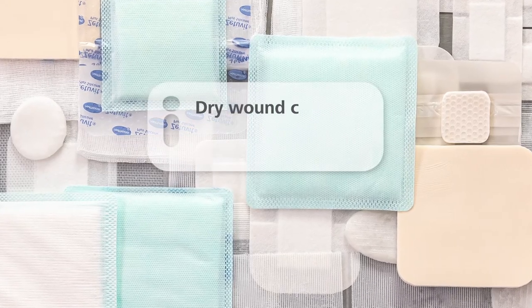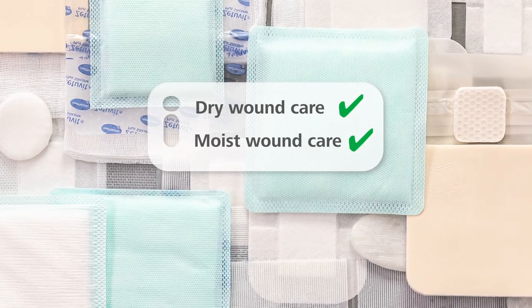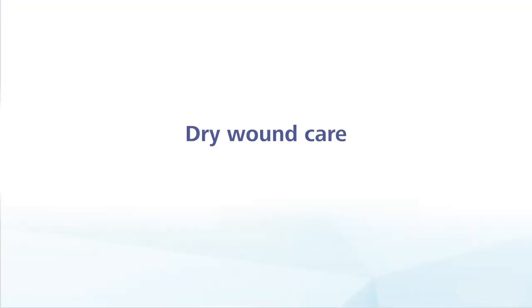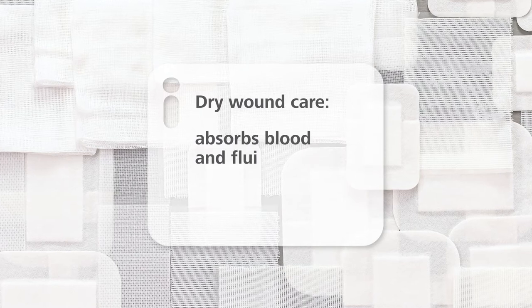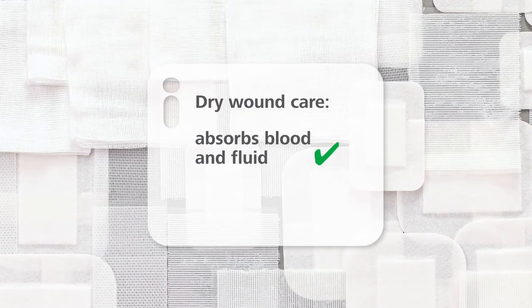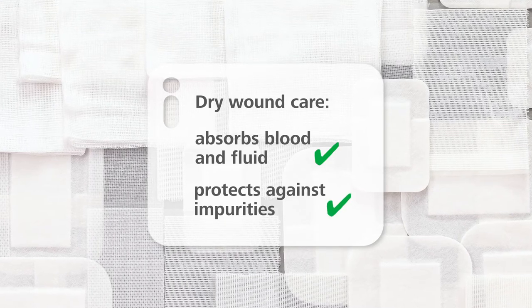In general, a distinction is made between dry and moist wound care. Dry wound care means covering the wound with a dry dressing. It absorbs blood and wound fluid, the so-called exudate, and protects against contamination and mechanical injuries.